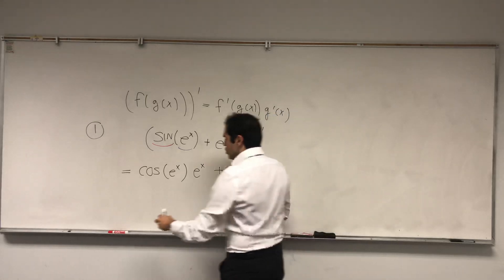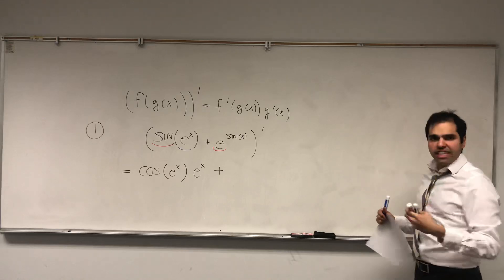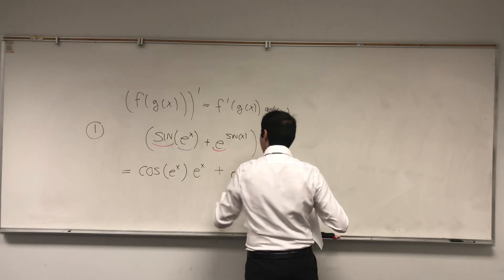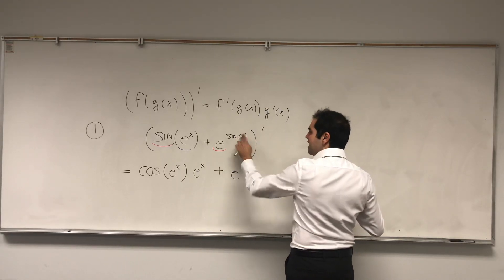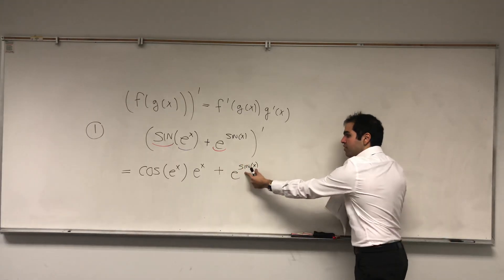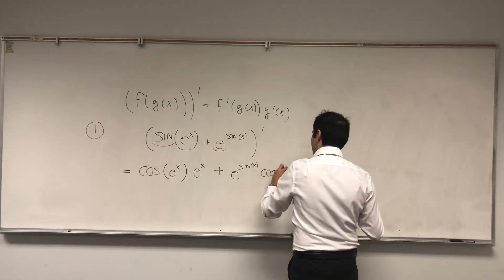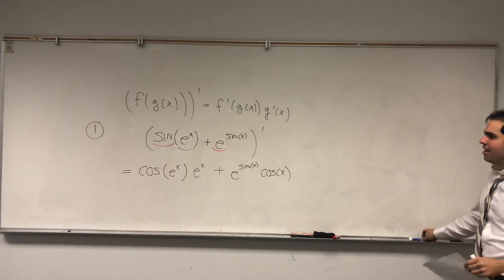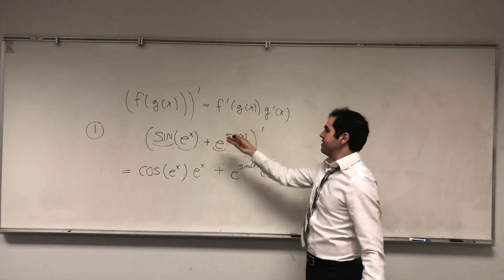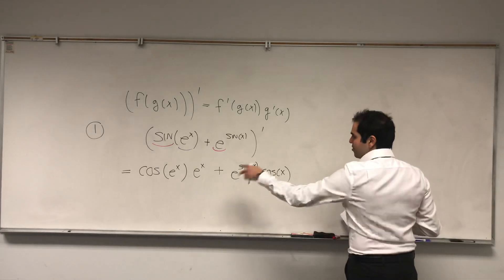The other part: you again differentiate the outside function, which here is e to the x. So the derivative of e to the x is e to the x, but again e of the inside function, which is sine of x, times the derivative of the inside function, which becomes cosine of x. So again, this example was meant to emphasize that the inside function and the outside function are different — so don't confuse them.